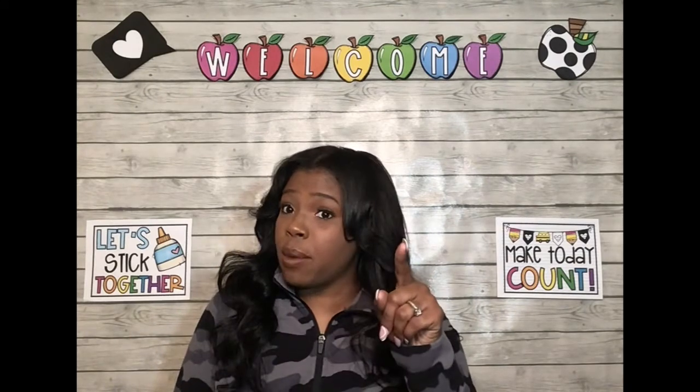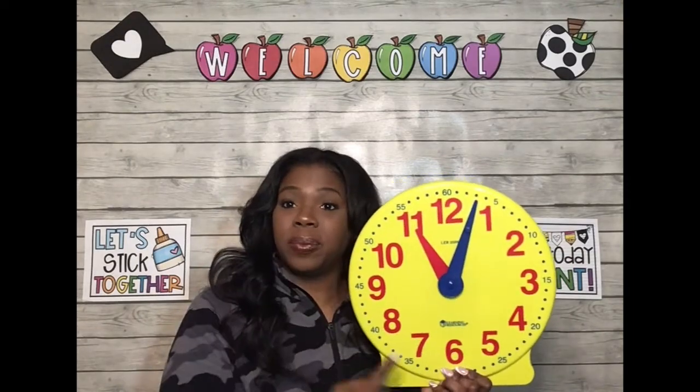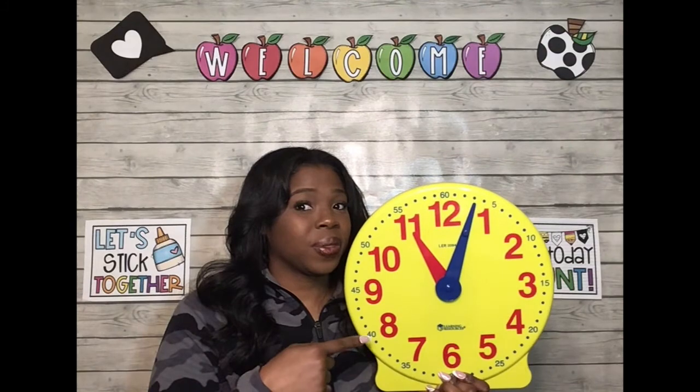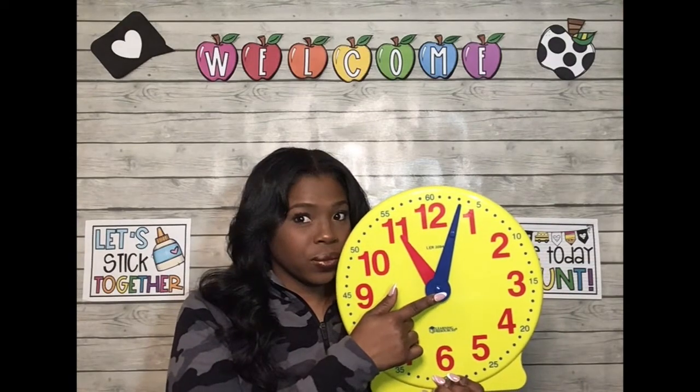Let's review really quickly before we move on. Let's look at the parts of a clock and see if you can guess the name of each part before I say it. What is this part of the clock called? Good job — that's the clock's face. What are these called? Great job — those are the clock's hands.